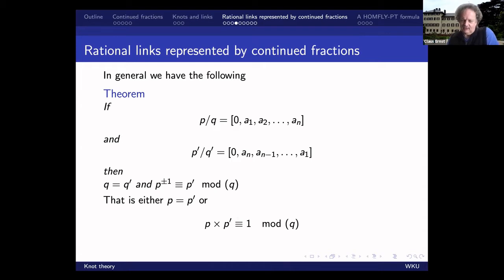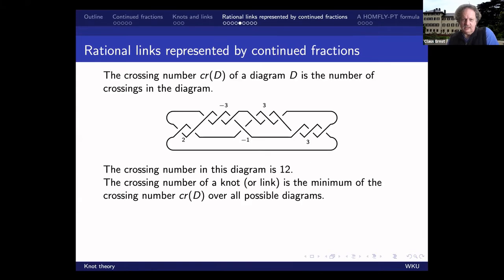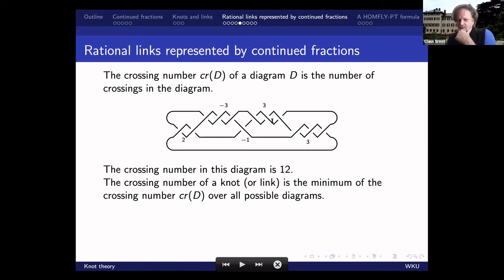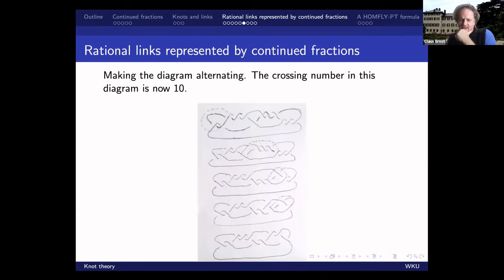So this is a number theory idea. Now I need to introduce one more concept: the crossing number. What is the crossing number? It is simply the number of double points you have. So in this particular picture, if you add 2 + 3 + 1 + 3 + 3, you get 12. This is a diagram with 12 crossings. The crossing number of the knot or link is the minimal number of crossings.